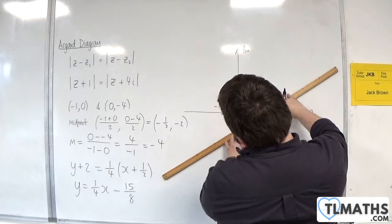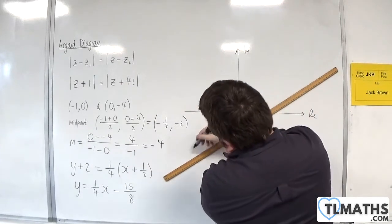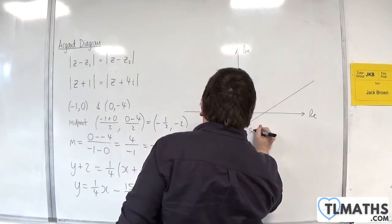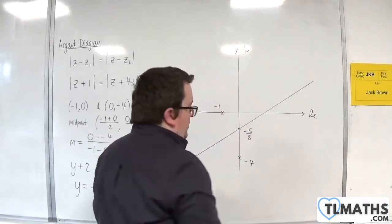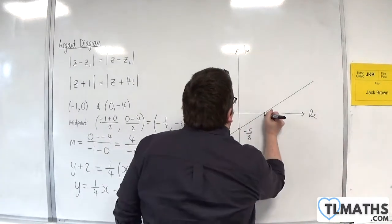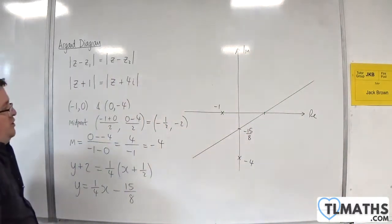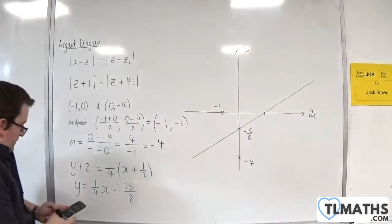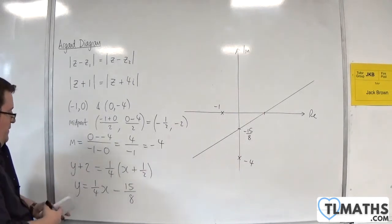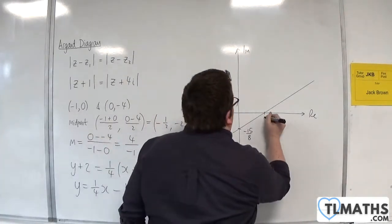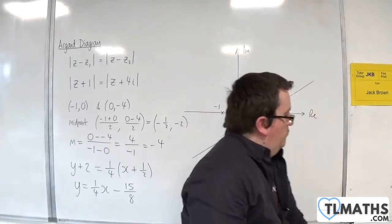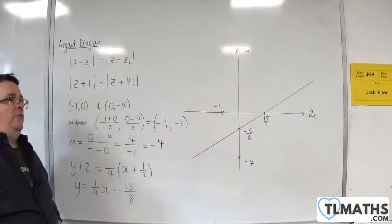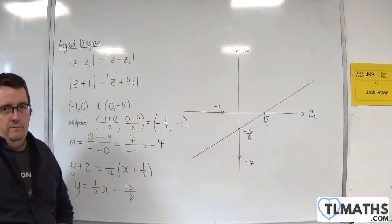So 1/4x - 15/8. This is your -15/8, and then you've got that point there when y is 0, so 15/8 times 4 equals 15/2. So that is my perpendicular bisector using first year A-level maths techniques, and that's perfectly fine.